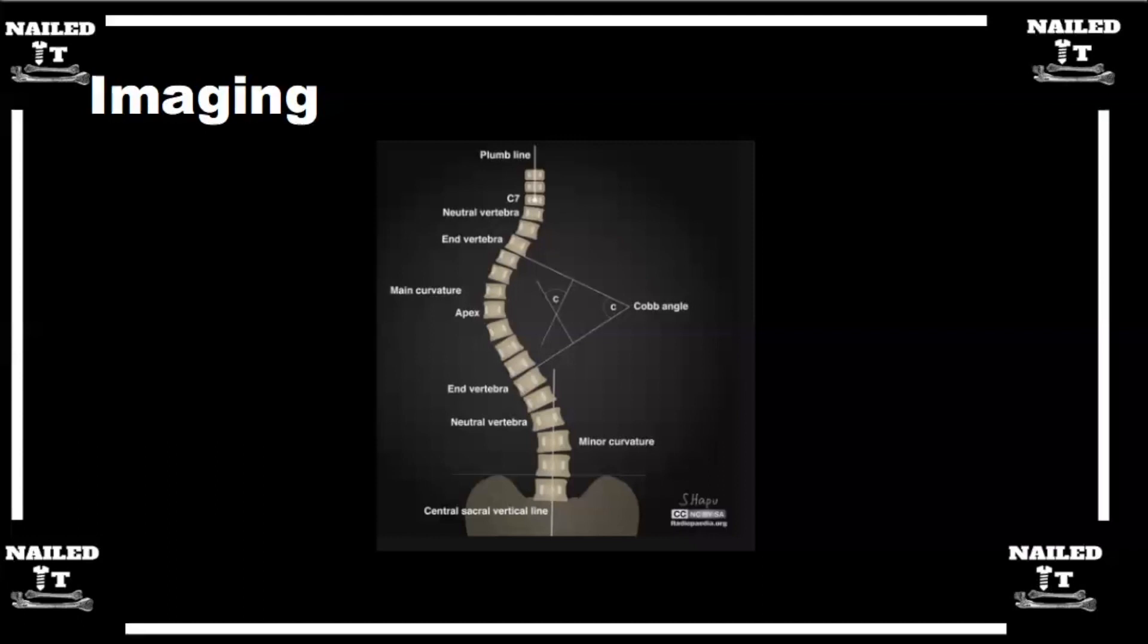The last vertebra that we sometimes talk about is the stable vertebra. The stable vertebra is the vertebra that is most cephalad, meaning highest towards the head, that is bisected by the center sacral vertical line. So the last vertebra that's cut in half by the center sacral vertical line, that is your stable vertebra. On this picture here, that's L3, and your neutral vertebra here is L2, and your end vertebra appears to be T11.